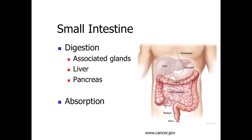The organs we're going to be focusing on in this lecture are the small intestine and the colon — the colon being the large intestine. The small intestine is going to be involved primarily with digestion and absorption. We'll be looking at associated glands later, but essentially what's occurring within the small intestine is coupled to secretions coming from either the liver or the pancreas. We'll talk about those in part five of this lecture series.